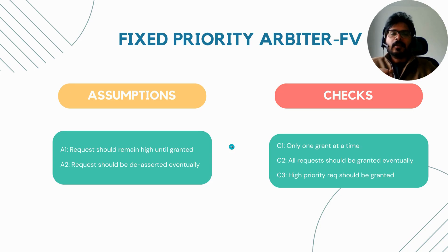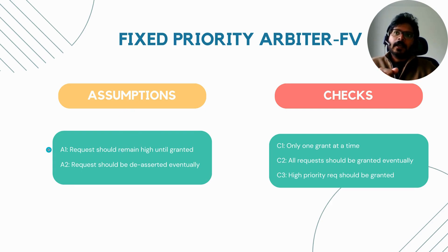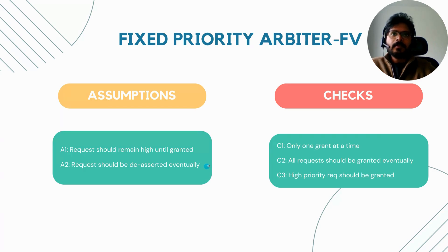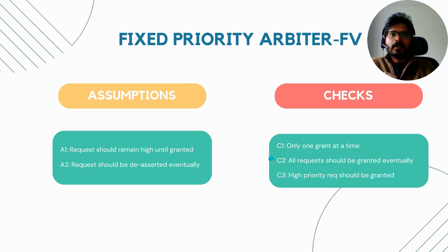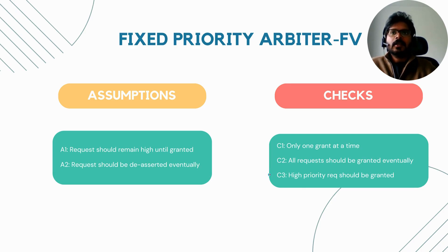In the non-symbolic approach, the assumptions we require are: first, a request should remain high until it is granted; and second, a request should be de-asserted eventually. The checks we are going to discuss are: only one grant at a time at the output; all requests should be granted eventually — this is also called a liveness condition; and the critical property — a high priority request should always be granted. If requests zero and one are both requesting, we should make sure that zero is the one getting the grant.